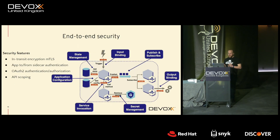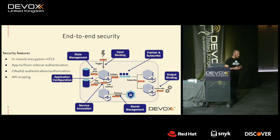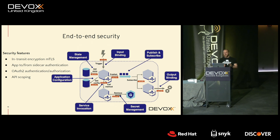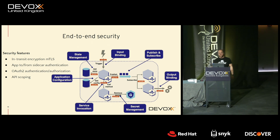When you use DAPR, all interactions between sidecars have MTLS by default — DAPR issues self-signed certificates and distributes them to the sidecars, encrypting everything. You can extend this with token-based authentication between the app and the sidecars. Additionally, you can use an OAuth provider to decide which services can call other services or access which infrastructure. You can scope DAPR APIs to specific apps, giving you all the options to lock DAPR down.